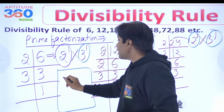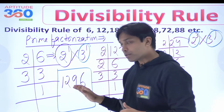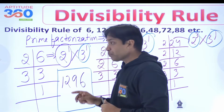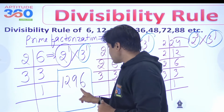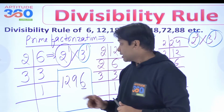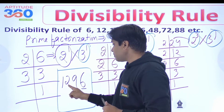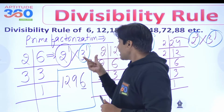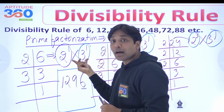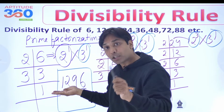Let me take a small number so we can check whether it is divisible or not. Say for example I take 1296. Is this number divisible by 6? The divisibility rule of 2: the last digit has to be even — it is. The rule of 3: the sum of digits must be divisible by 3 — so 6 plus 9 is 15, plus 2 plus 1 is 18. Is 18 divisible by 3? Yes it is. So 1296 is divisible by both 2 and 3, and hence this number is divisible by 6.